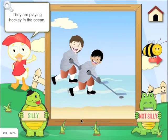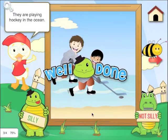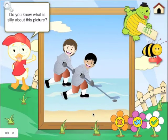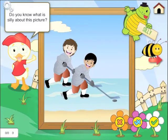Now here we have a silly image: they are playing hockey in the ocean. I'm going to hit silly. You get a well done. Do you know what is silly about this picture? Now the child is prompted to verbalize what's silly about this picture. We know that kids don't play hockey in the ocean.